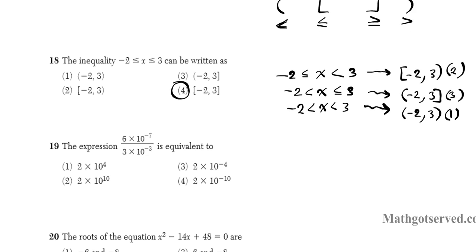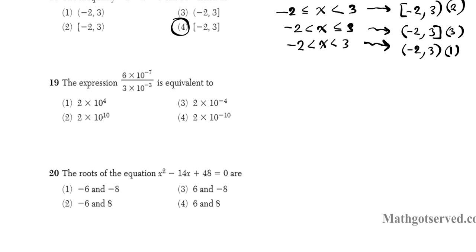Let's move on to question 19. It says the expression 6×10⁻⁷ over 3×10⁻³ is equivalent to. So we're just going to use the law of exponents here to resolve the exponential component and just basic division for the numerical part. So for the 6 over 3, we just simply divide 6 by 3, right? 6 divided by 3 is 2 times 10 to the... Now any time you divide exponents with the same base, you subtract the exponents.